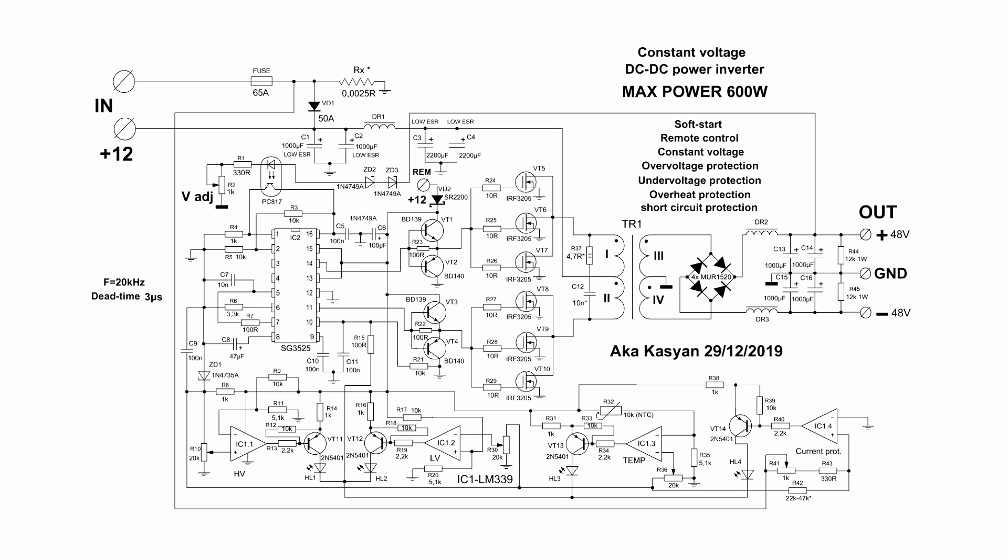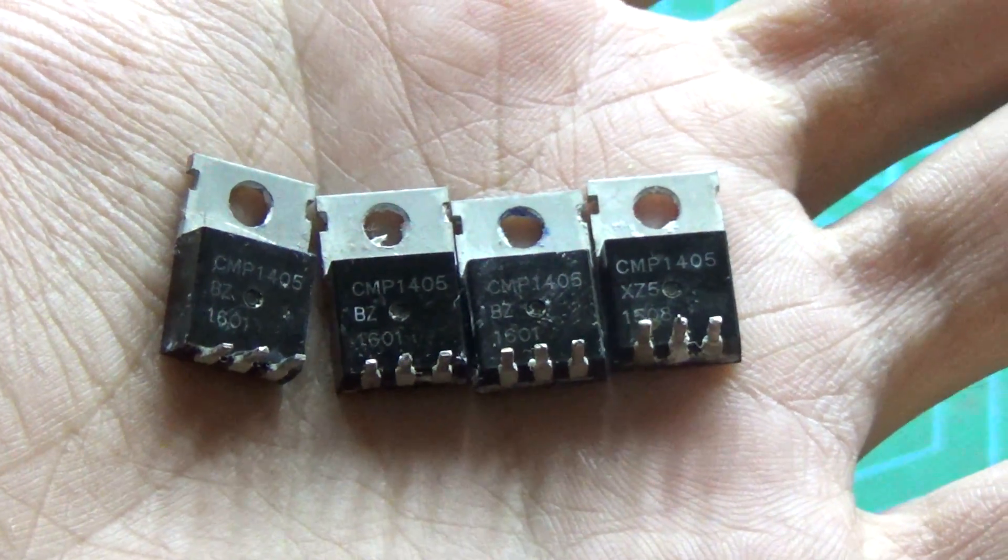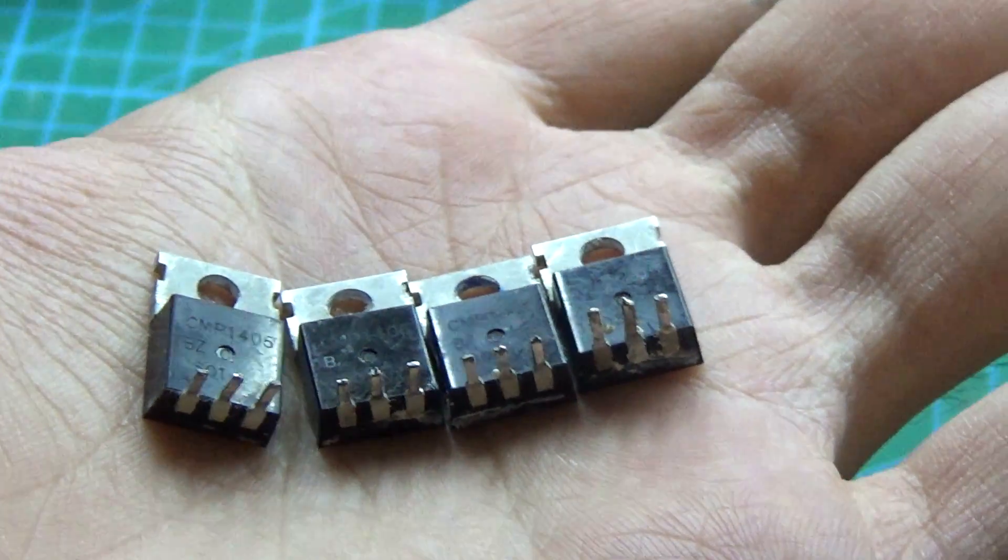At high level output of the chip, the upper transistor will work. Through the open junction of this transistor, 12V will go to the gates of the upper shoulder field effect transistors and will fully open them. And when the output level of the chip is low, this leads to unlocking the lower transistor of the driver. Through it, the gate capacitance of the FETs is discharged to the supply ground, which ensures reliable closing of field effect transistors.